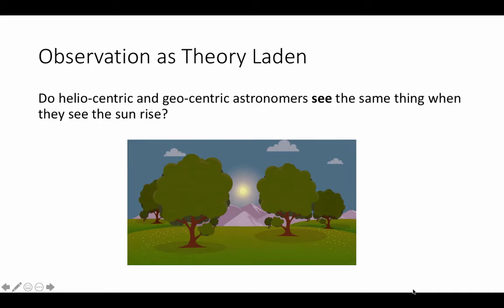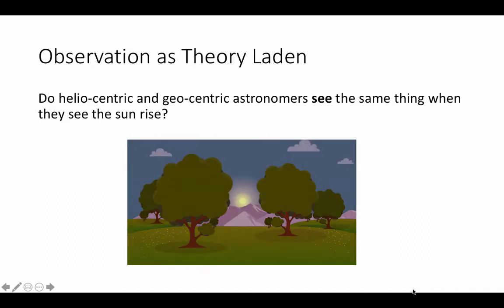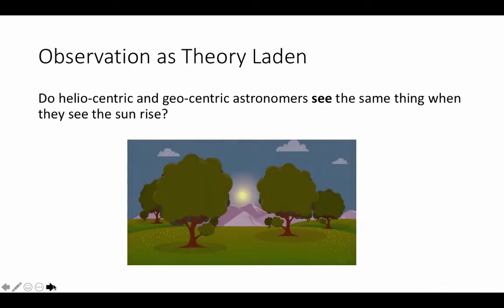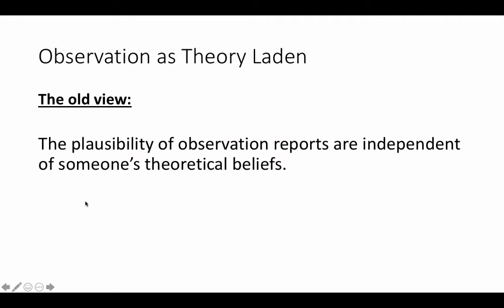Do heliocentric and geocentric astronomers see the same thing when they see the sun rise? Geocentric astronomers thought the earth was the center of the universe, so the earth was stationary and the sun literally moves around the earth. Whereas heliocentric astronomers think the earth is moving around the sun — so while the sun looks like it's moving around earth, really the earth is moving around the sun. Do they see the same thing? Here's the old view: the plausibility of your observation reports are independent of your theoretical beliefs — your theoretical beliefs have no impact on what you observe. You can separate them; they're shielded from each other.